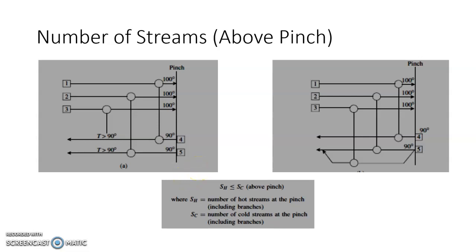In the previous video, we saw that while designing a heat exchanger network, in the grid diagram we represent above-pinch and below-pinch regions. Above pinch, the number of hot streams has to be less than or equal to the number of cold streams, because every hot stream at the pinch requires a corresponding cold stream at the pinch to maintain delta T minimum. If there are fewer cold streams, we split cold streams until the numbers are equal.